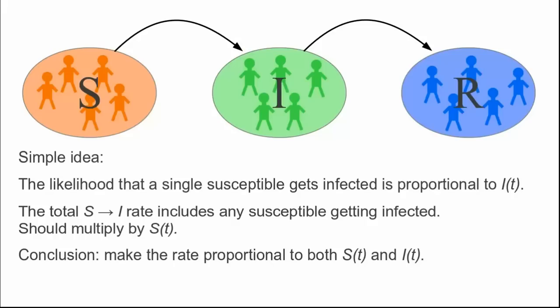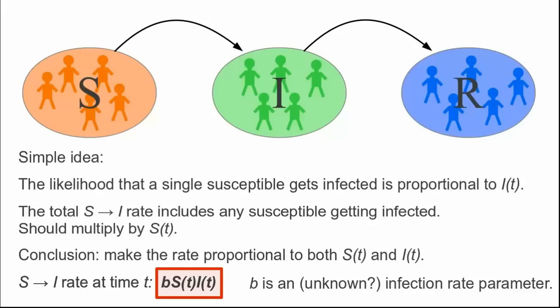If we let B be the constant of proportionality, then we can write the infection rate as B times S of t times I of t. This parameter B is a single number that combines two effects: the likelihood that a susceptible and infective will interact, as well as the likelihood that such an interaction will lead to an infection. A large B would correspond to a population where folks have lots of social interaction and the disease is highly contagious. Such a combination would maximize the infection rate. A small B would correspond to a population of reclusive individuals and a disease that is difficult to transmit. This combination would minimize the infection rate.